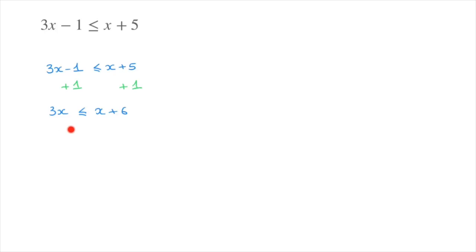On the left hand side there is no longer a term without an x, which is exactly what we wanted. Next, let's get rid of this x on the right hand side. The x here can be thought of as 1x — we just never write the coefficient 1 — so this is a positive 1x being added. To get rid of it we subtract x from the right hand side, and we must do the same on the left hand side. That leads us to 3x minus x, which is 2x, less than or equal to x plus 6 minus x, which leaves us with 6.